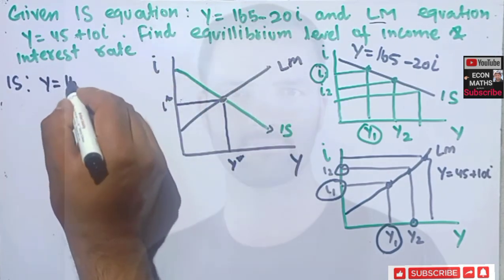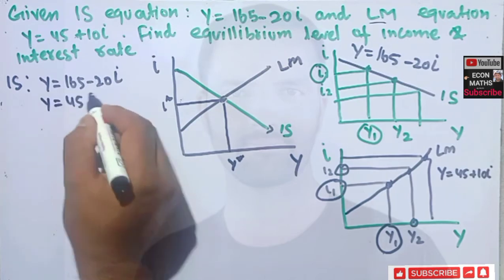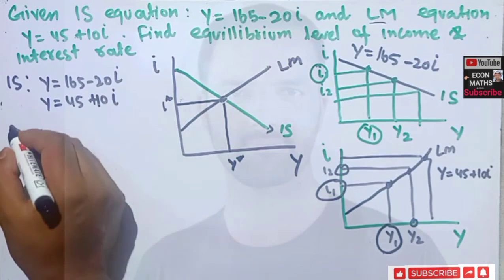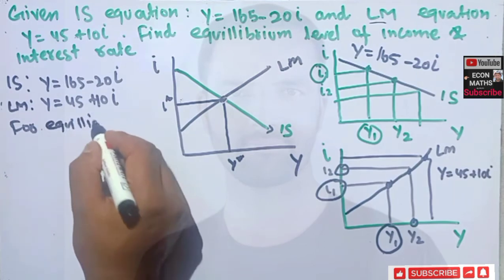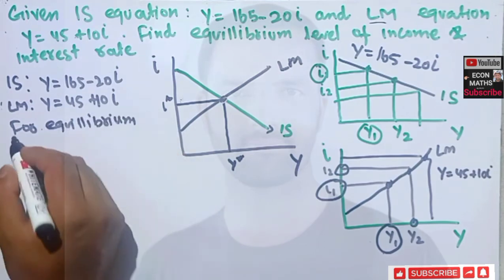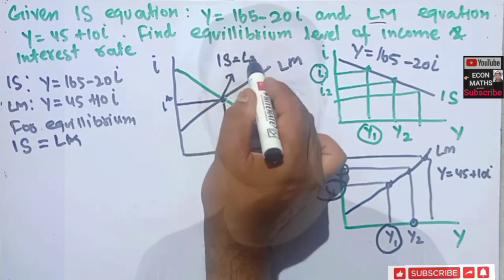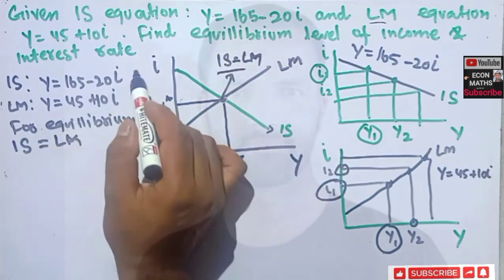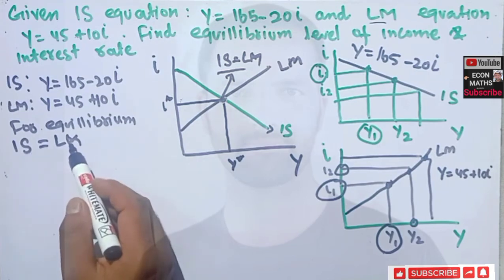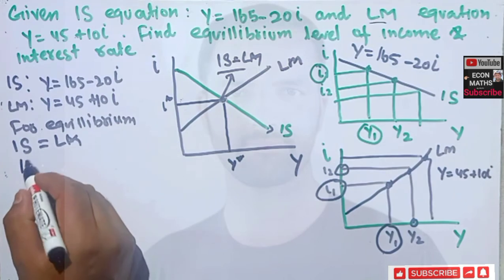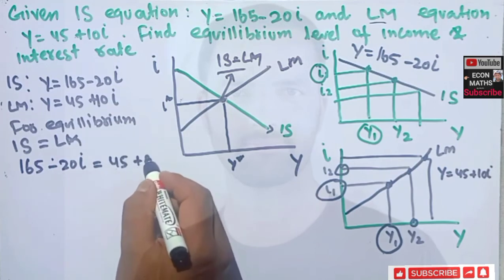At equilibrium, the IS equation must equal the LM equation. So we set 165 − 20I equal to 45 + 10I. This equating of the two equations gives us the equilibrium condition.